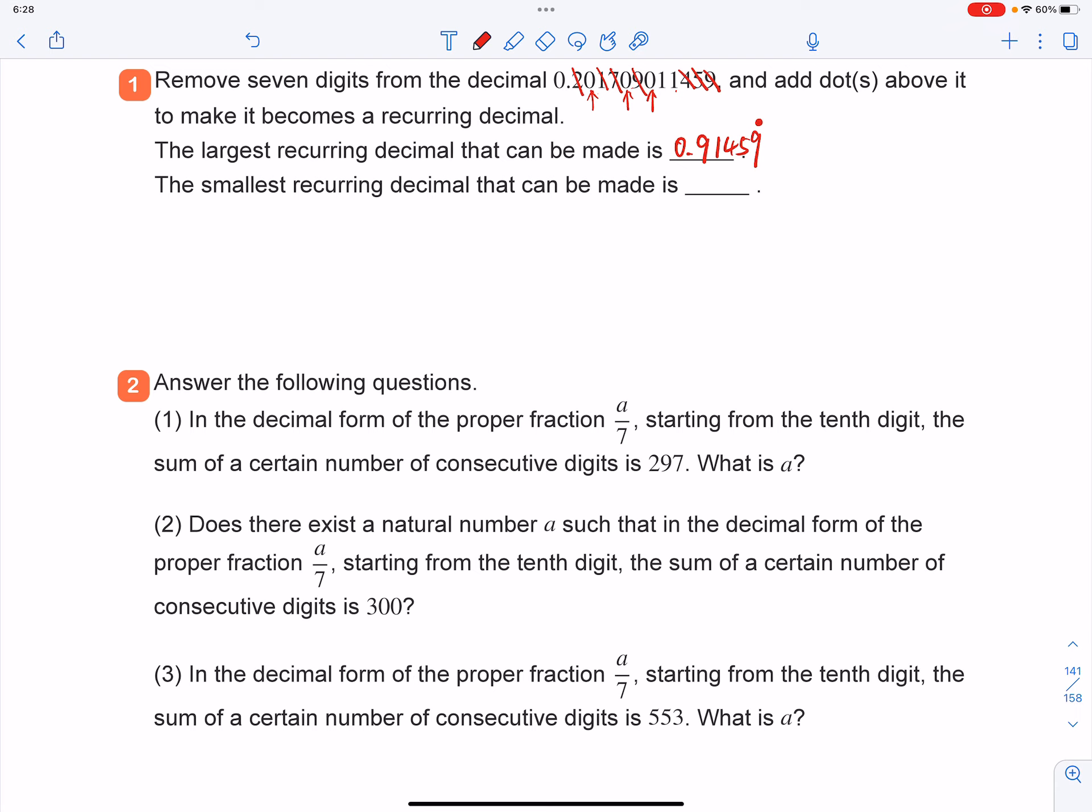So this number will become 0.00011. All right. And if you want to make this number into a recurring decimal and it's as small as possible, you have to add these two dots in this two position, because that way, after this, this one over here, you'll have three zeros after that. So that will be the smallest where you can make the number as small as possible.